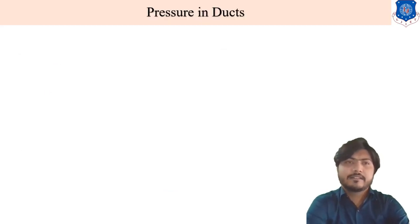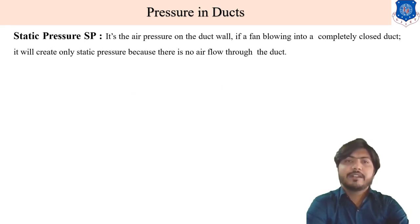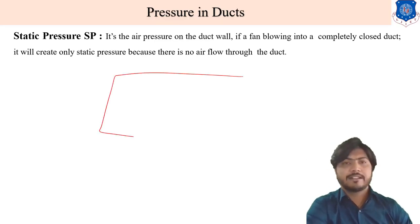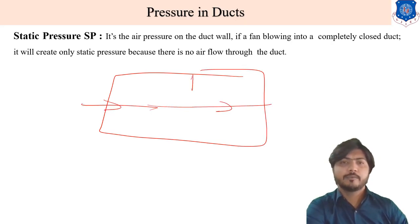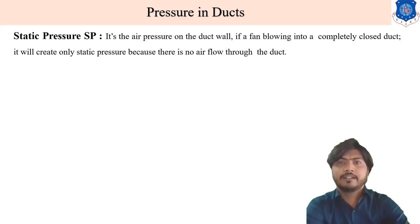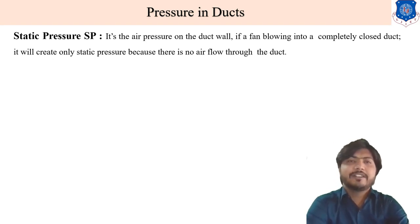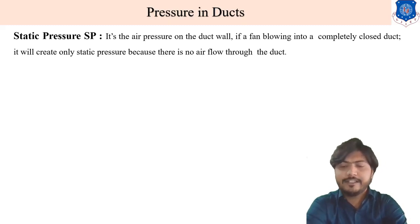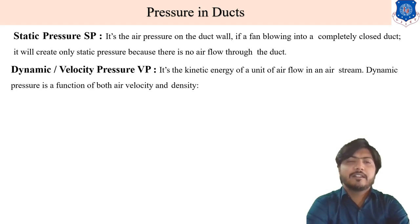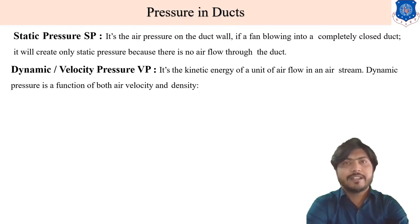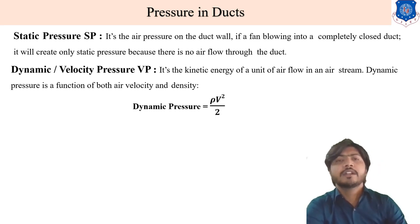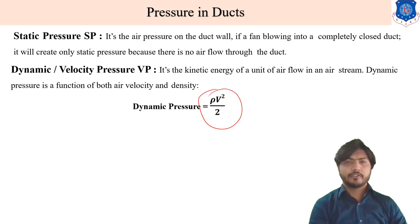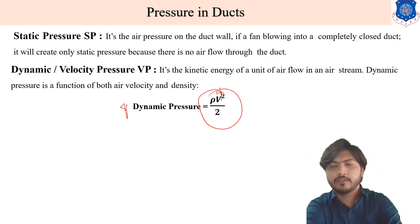Regarding pressures in ducts: static pressure (SP) is the pressure exerted on the duct wall. If a fan blows into a completely closed duct, it creates only static pressure because there is no airflow. Dynamic or velocity pressure (VP) is the kinetic energy of airflow, a function of both air velocity and density, given by ρv²/2. Dynamic pressure increases as velocity increases.